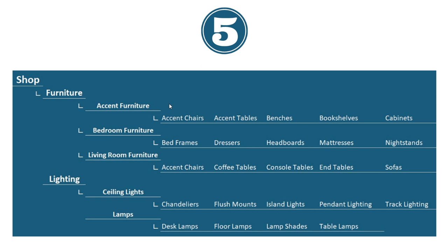So for accent furniture, you can see accent chairs, tables, benches, and bookshelves. For bedroom furniture: bed frames, dressers, and headboards. You want to make sure your website architecture is as organized as possible, because then as Google is ranking your website, they're going to be able to say this website is very organized — if someone comes to it looking for bedroom furniture, they'll find exactly what they're looking for. While this seems straightforward, it's actually really difficult to keep your website organized as it continues to grow to hundreds or even thousands of pages. It helps both visitors and helps Google rank you higher because your website has a good architecture.